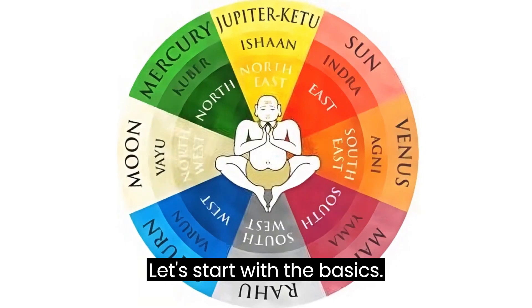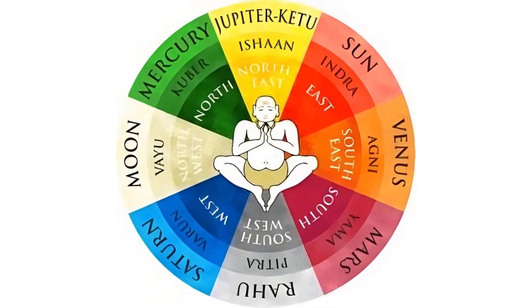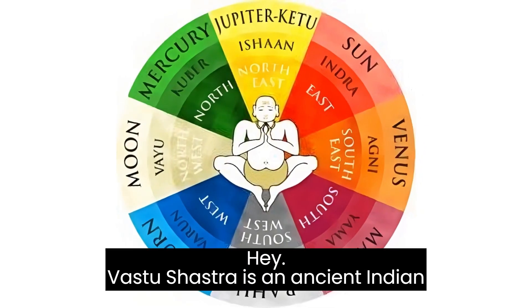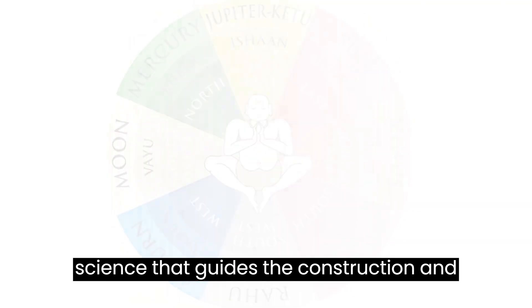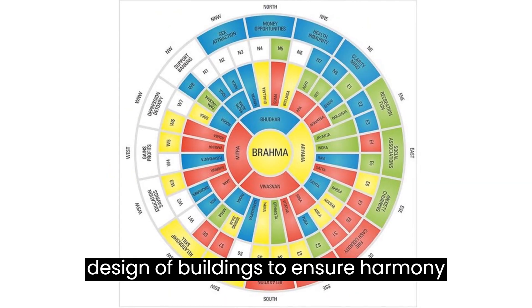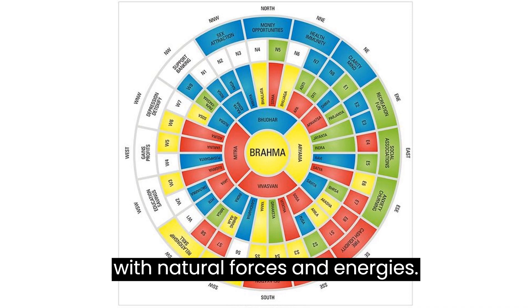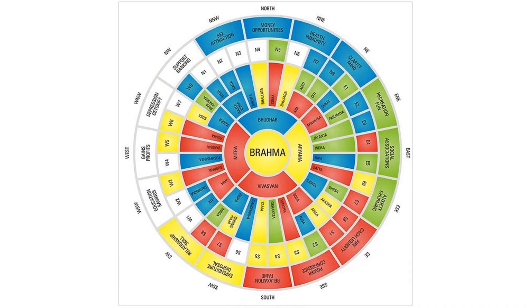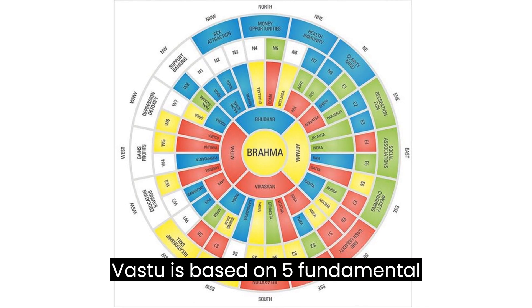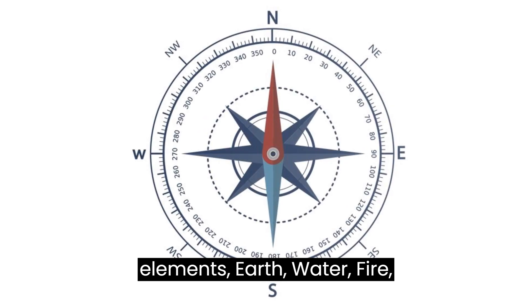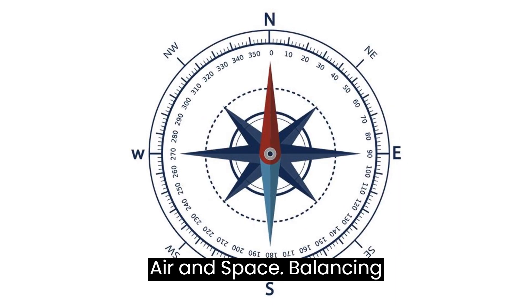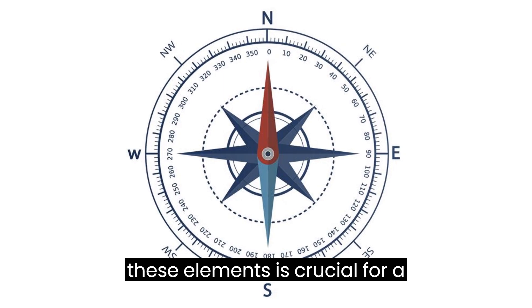Let's start with the basics. Vastu Shastra is an ancient Indian science that guides the construction and design of buildings to ensure harmony with natural forces and energies. Vastu is based on five fundamental elements: earth, water, fire, air, and space. Balancing these elements is crucial for a harmonious living environment.